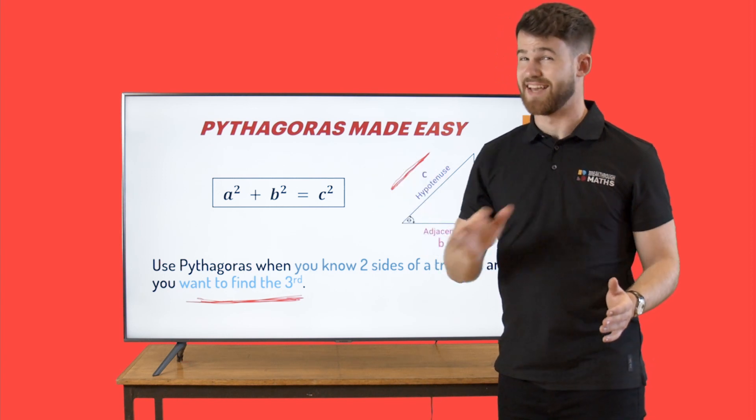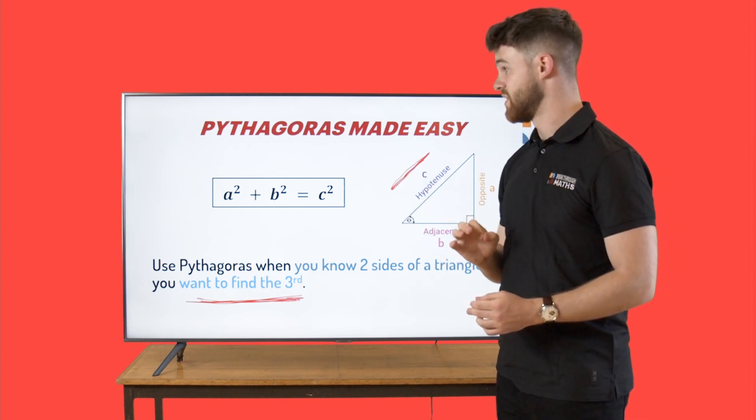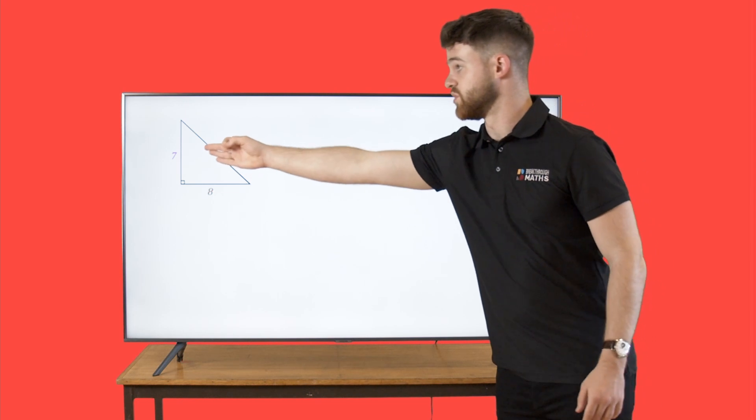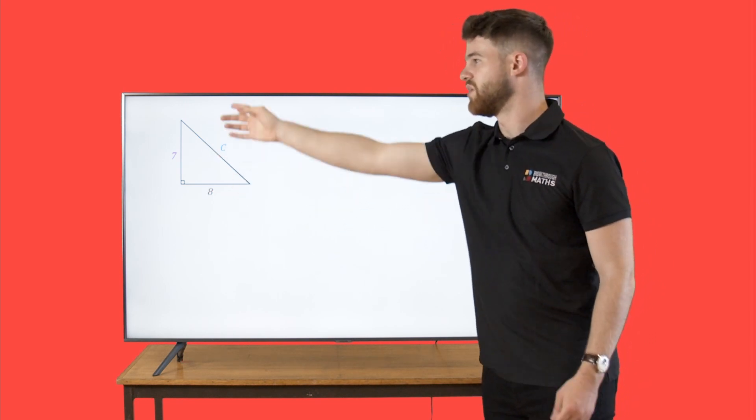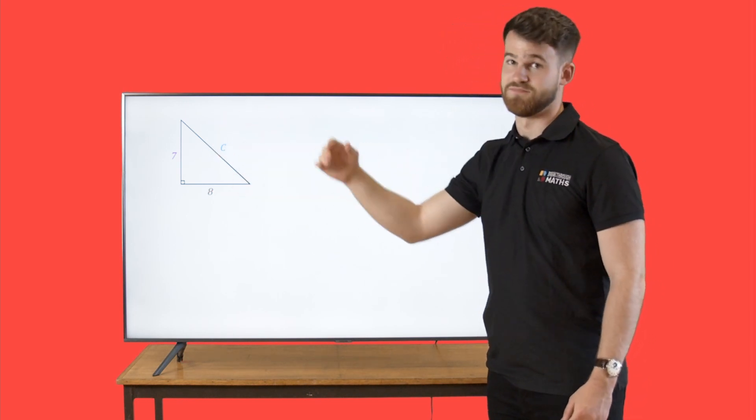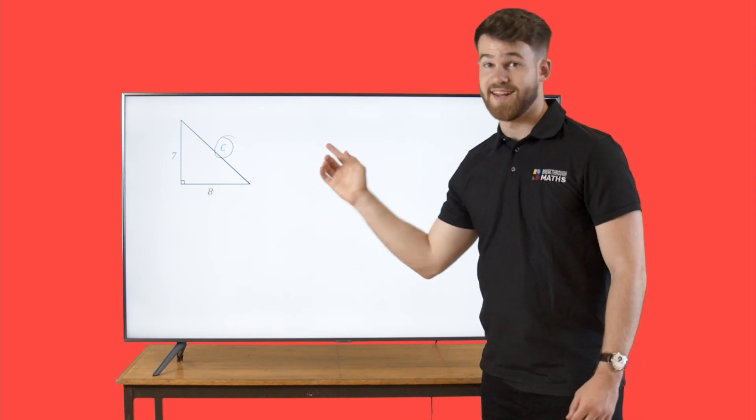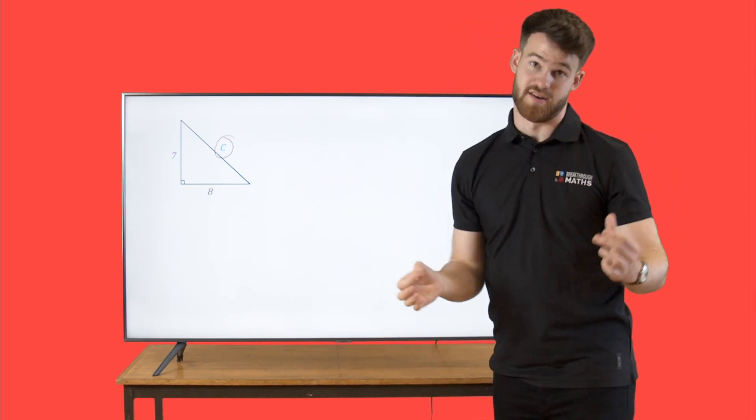Now let's look at an example. So here we have a triangle with measurement 7, 8, and we want to find the length of this side c. We can clearly see that this side c is the hypotenuse.